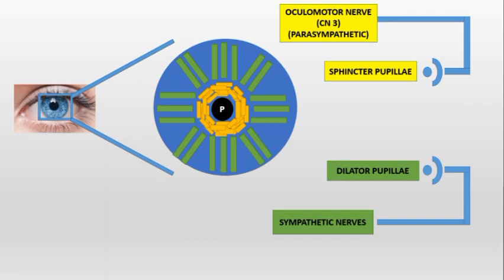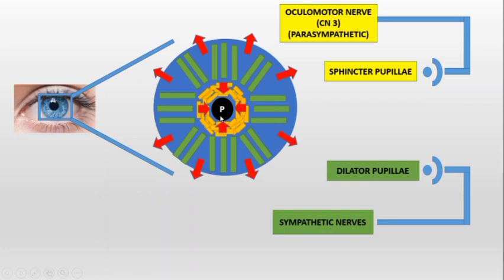The sphincter pupillae constantly tries to make the pupil small — that is miosis — while the dilator pupillae constantly tries to make the pupil big — that is mydriasis. Normally these two actions cancel each other, so the pupil is in its normal position. But when there is a need or any pathology, one can overcome the other, so the pupil can become small or get dilated.